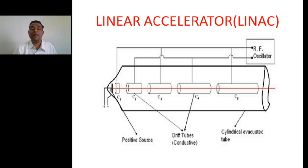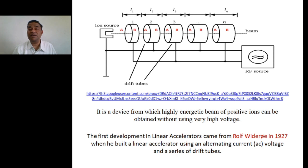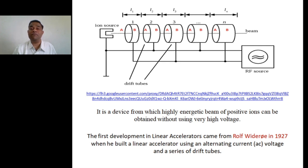This is the simple arrangement of a linear accelerator. It can be defined as a device which produces a highly energetic beam of positive as well as negative particles by the proper application of AC voltage. The first linear accelerator was developed in the year 1927 by Rolf Biderot.